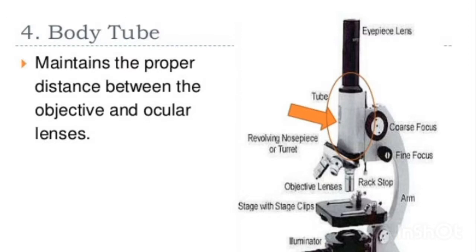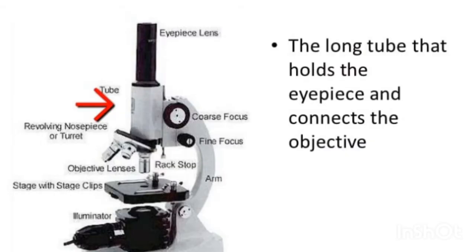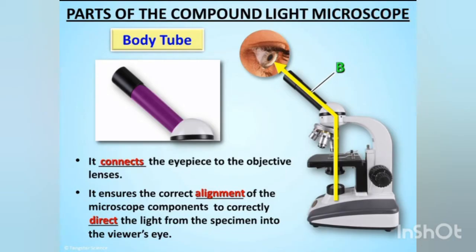The body tube is a standardized length, anthropometrically related to the distance between the height of a bench or table top on which the microscope stands and the position of the seated observer. The body tube and the objective are separated and arranged, and each microscope has a standard or average length.